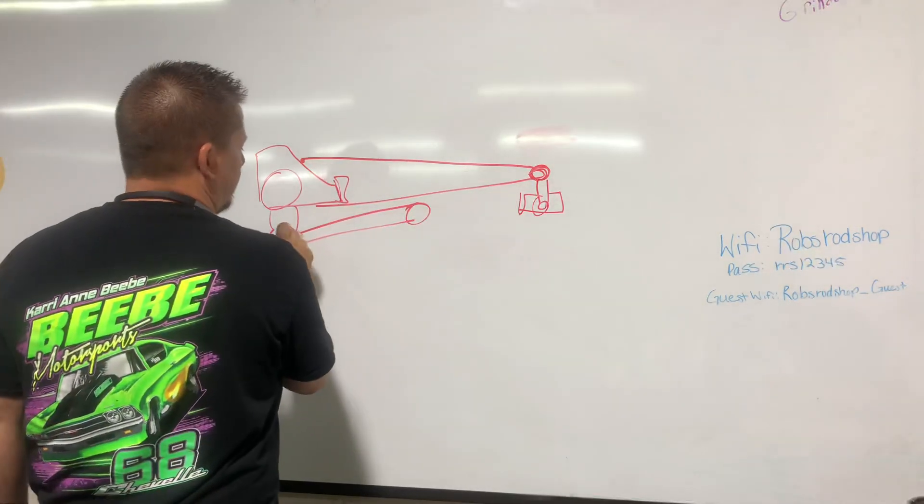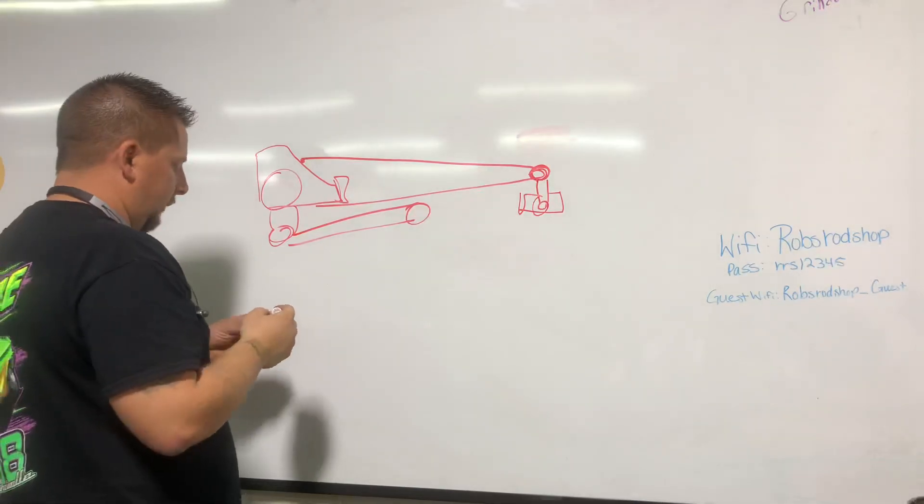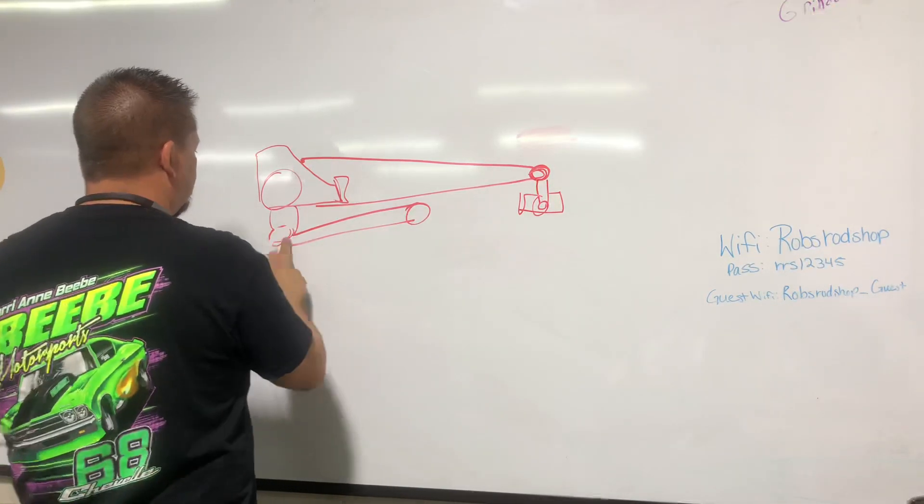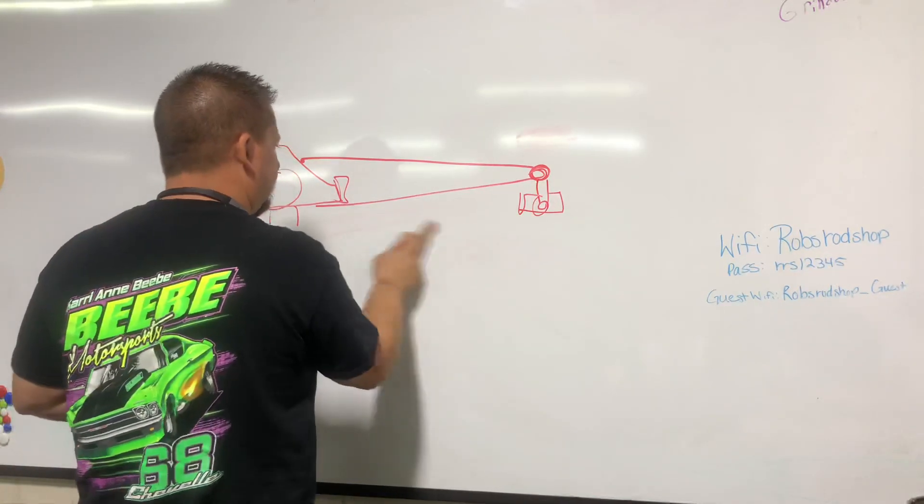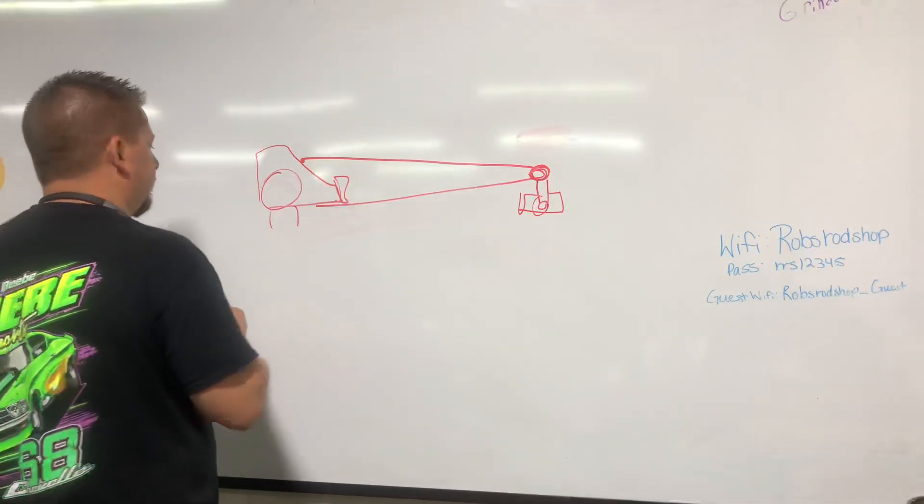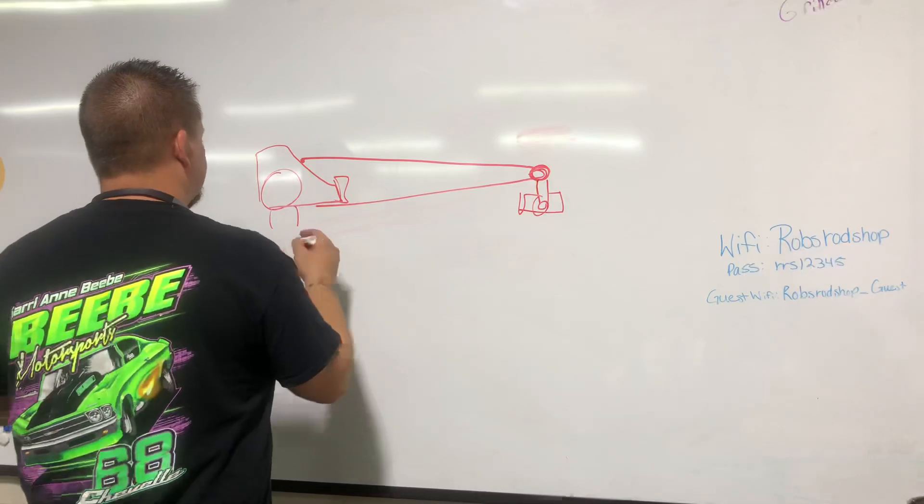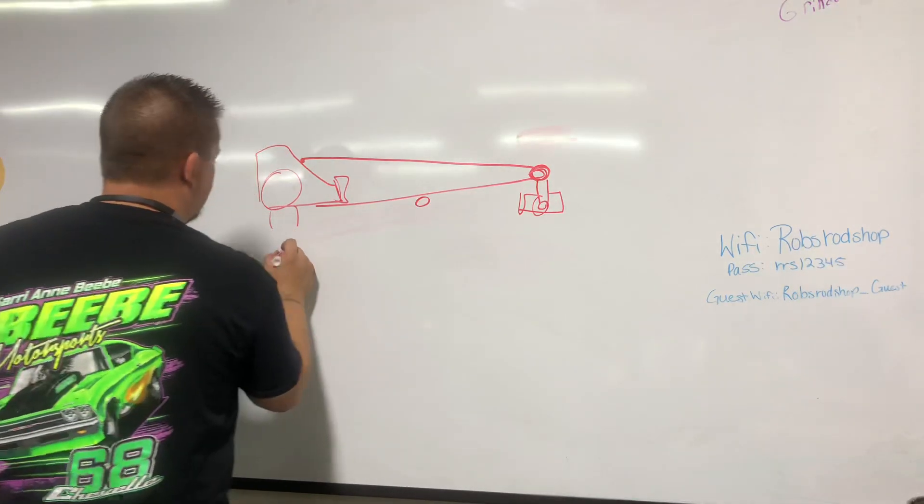So there's still pressure pushing on this arm, and when the pressure pushes on this arm, you can move it and it changes the way it reacts. Now naturally, once again, this thing does want to apply a little bit of anti-squat just because of where this thing's at and it's trying to roll the rear end down regardless. So if you take your lower control arm and move it up in the car and you move it down on the rear end, now we're pushing at more of an angle on this bar.